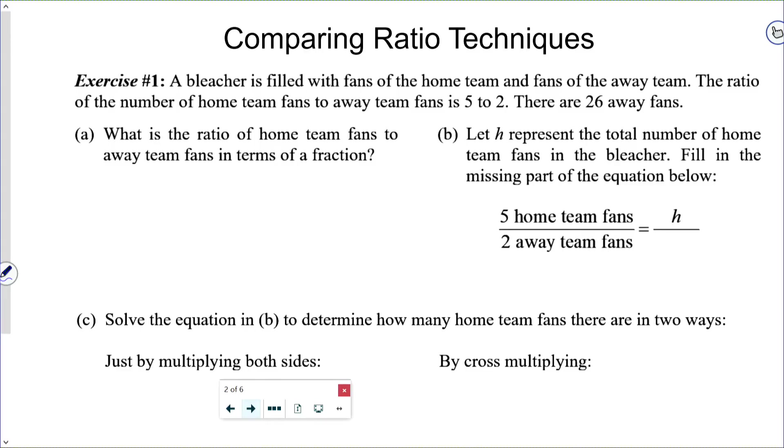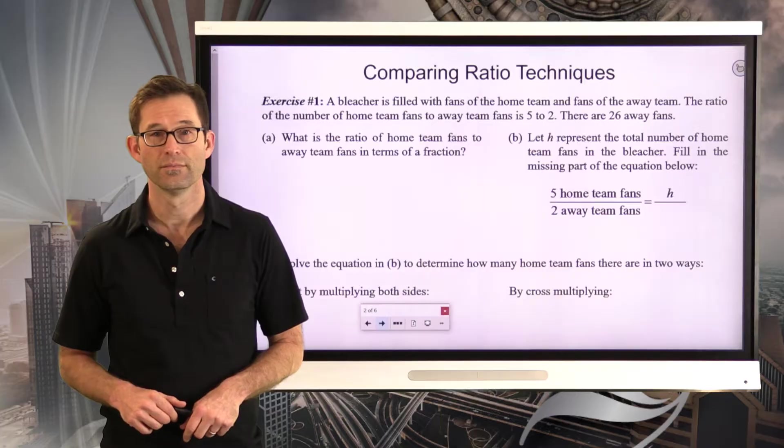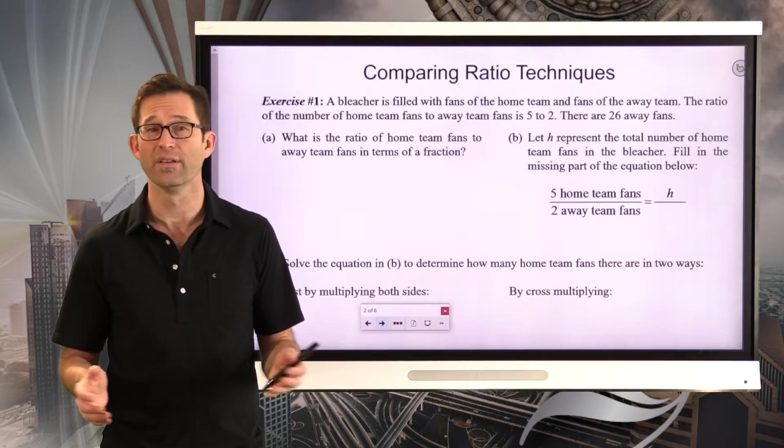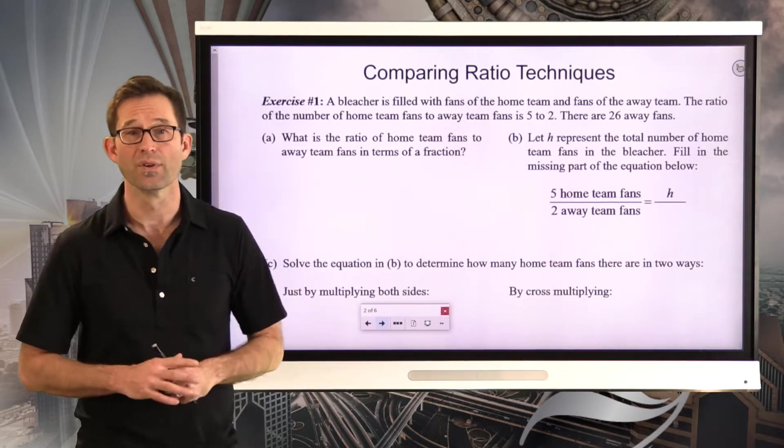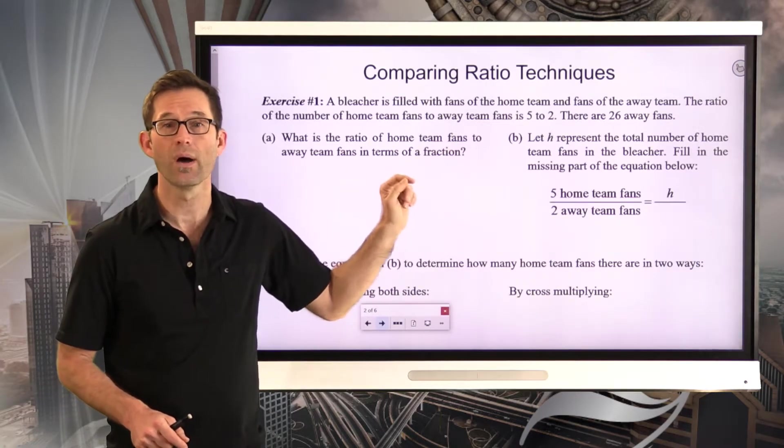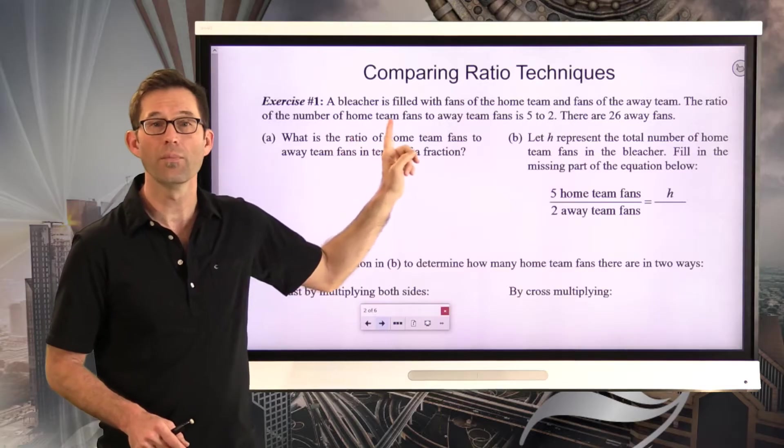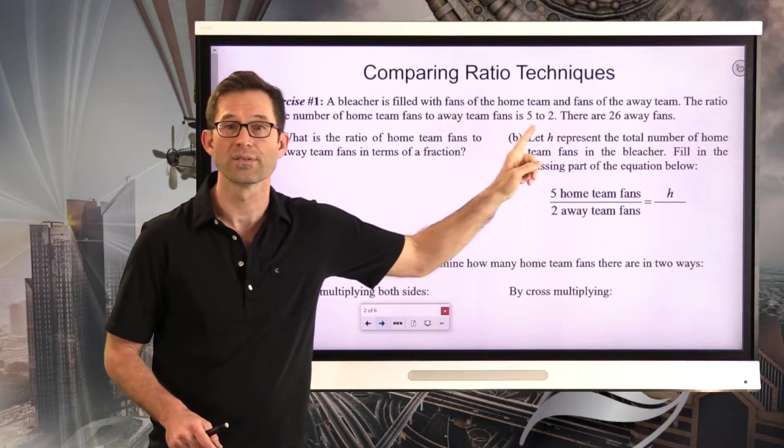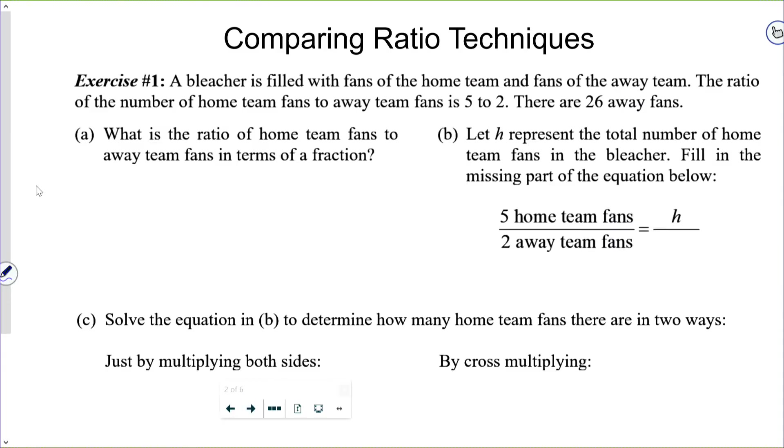A bleacher is filled with fans of the home team and fans of the away team. The ratio of the number of home team fans to away team fans is 5 to 2. There are 26 away fans. Letter A, what is the ratio of home team fans to away team fans in terms of a fraction?